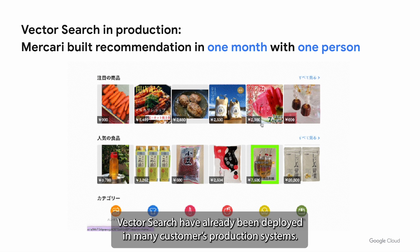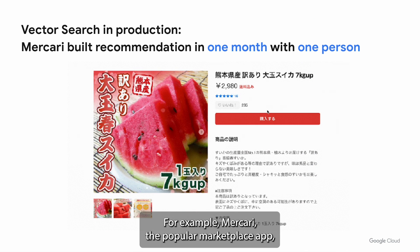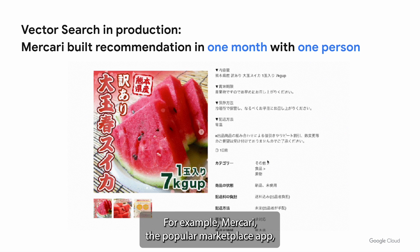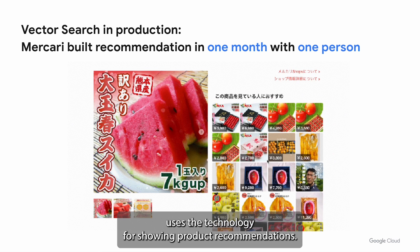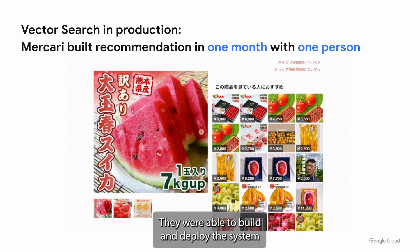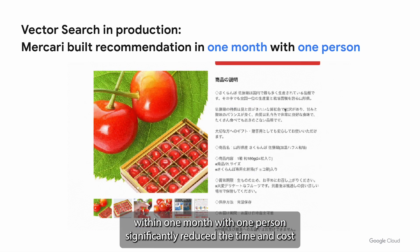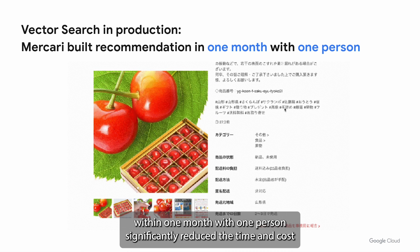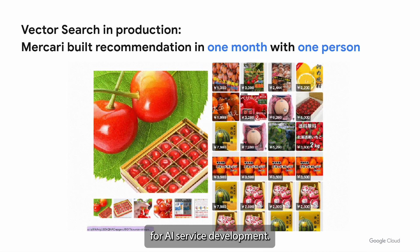Vector search has already been deployed in many customers' production systems. For example, Mercari, the popular marketplace app, uses the technology for showing product recommendations. They were able to build and deploy the system within one month with one person, significantly reducing the time and cost for AI service development.